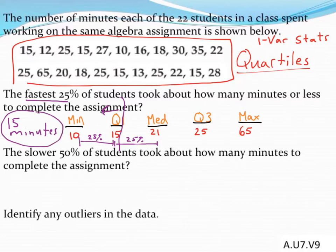Next, they ask about the slower 50%, the top 50% if you think about it that way. The slowest 50% are going to occur right at the median and above. Remember these are divided into 25% intervals, so altogether from the median up, there's about half our data.